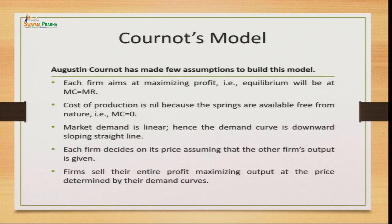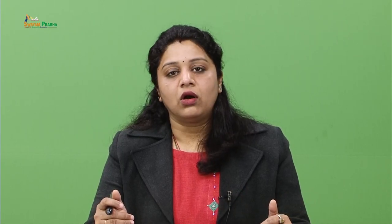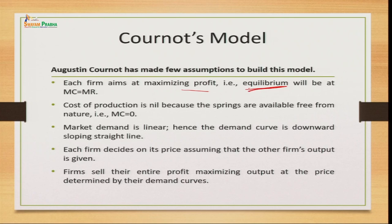Now let us move to the third model — Cournot's model, given by Augustin Cournot. This model is based on certain assumptions. The first assumption is that each firm aims at maximizing profit. The equilibrium point is where marginal cost equals marginal revenue — the additional cost of producing one unit equals the additional revenue from selling that unit.